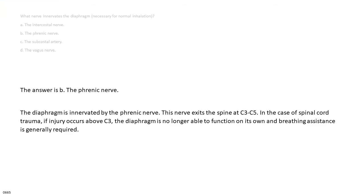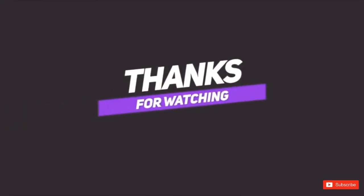The diaphragm is innervated by the phrenic nerve. This nerve exits the spine at C3 to C5. In the case of spinal cord trauma, if injury occurs above C3, the diaphragm is no longer able to function on its own and breathing assistance is generally required. The answer is B, the phrenic nerve.